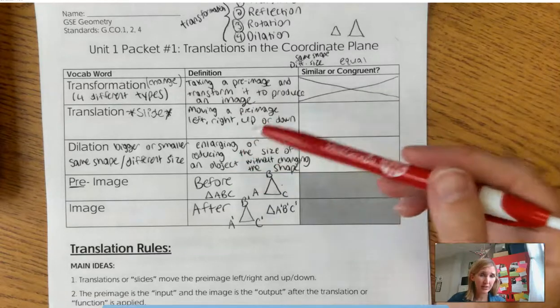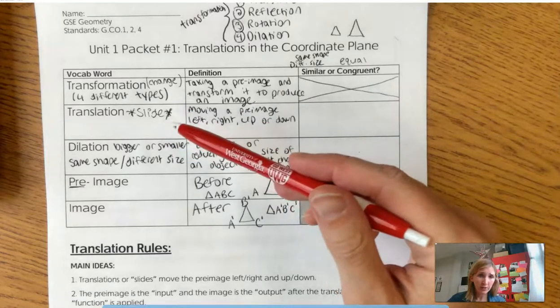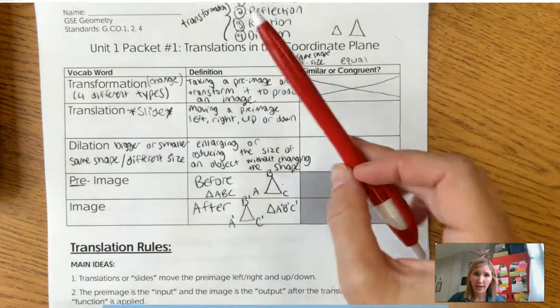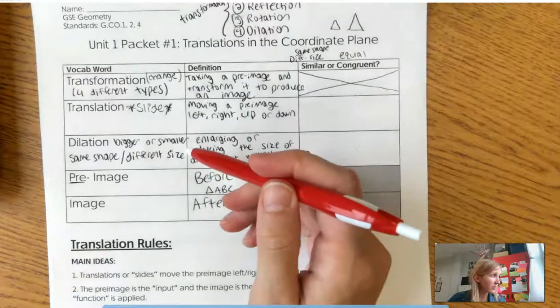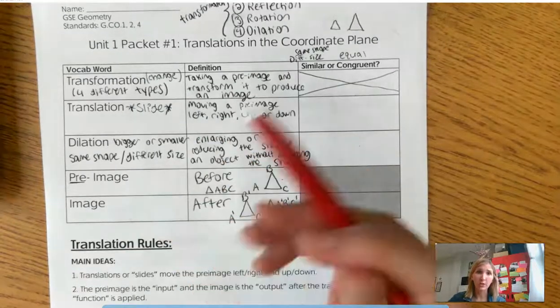Now, what's different about these is with translations, the size does not change. I'm just sliding it. With dilations, the size changes, right? You get bigger or smaller.